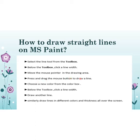Choose a new color from the color box, then below the toolbox click the line width, draw another line, and similarly draw lines in different colors and thickness all over the screen.